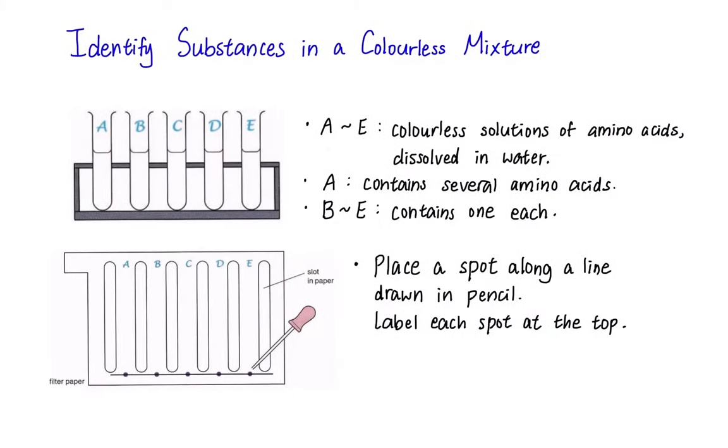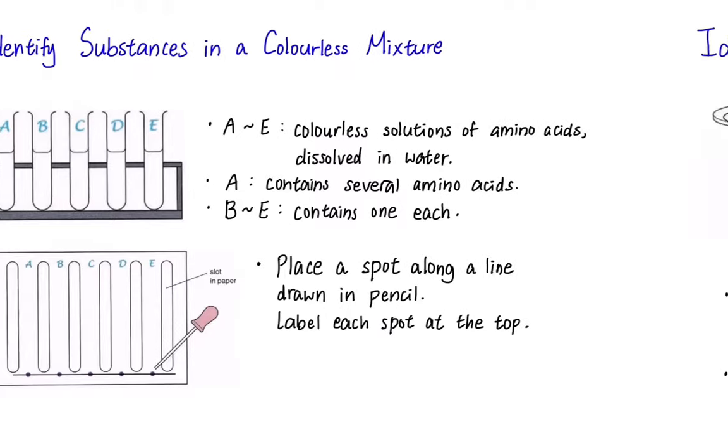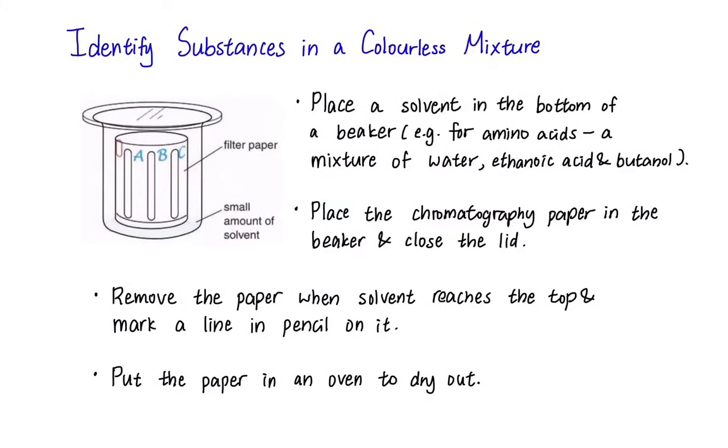We have five test tubes here all containing colorless solutions of amino acids dissolved in water. Test tube A contains a mixture of amino acids and we are to find out its content. Test tube B to E contain one amino acid each. Firstly, put a spot along a line drawn in pencil and label each spot at the very top of the filter paper.